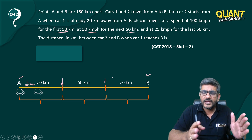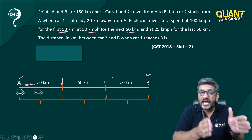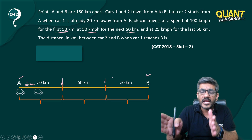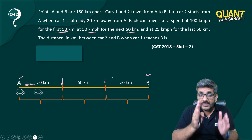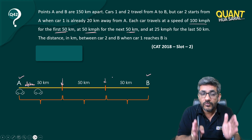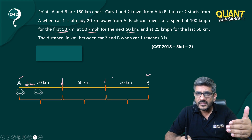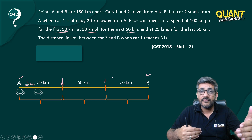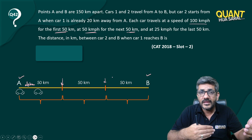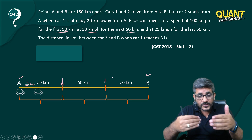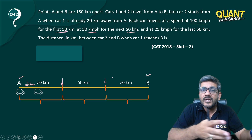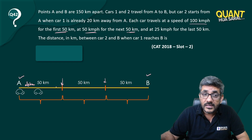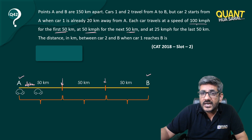The speeds at which they are moving are exactly the same for each and every stretch. So if initially the gap between the two cars is 20 kilometers and they are going to move at exactly the same speed, can I say the time difference between them would always remain the same? If car two starts at nine o'clock and car one started at eight forty, there is a gap of 20 minutes between them — this gap would always remain 20 minutes because they are both traveling at the same speed.